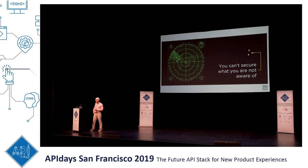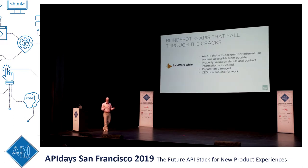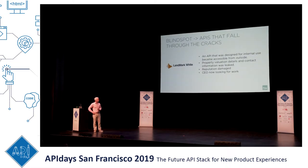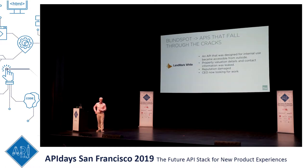Let me give a few examples of API security blind spots. About two months ago, Landmark White — you might have heard of the incident — had an API that was originally supposed to be internal only, but somehow it became available on the public site. Landmark White in Australia is the main property valuer. Property valuation details were leaked, contact information was leaked, reputation was damaged. Banks that interact with Landmark White for property evaluation were in a hurry to distance themselves. The CEO resigned. Real consequences.